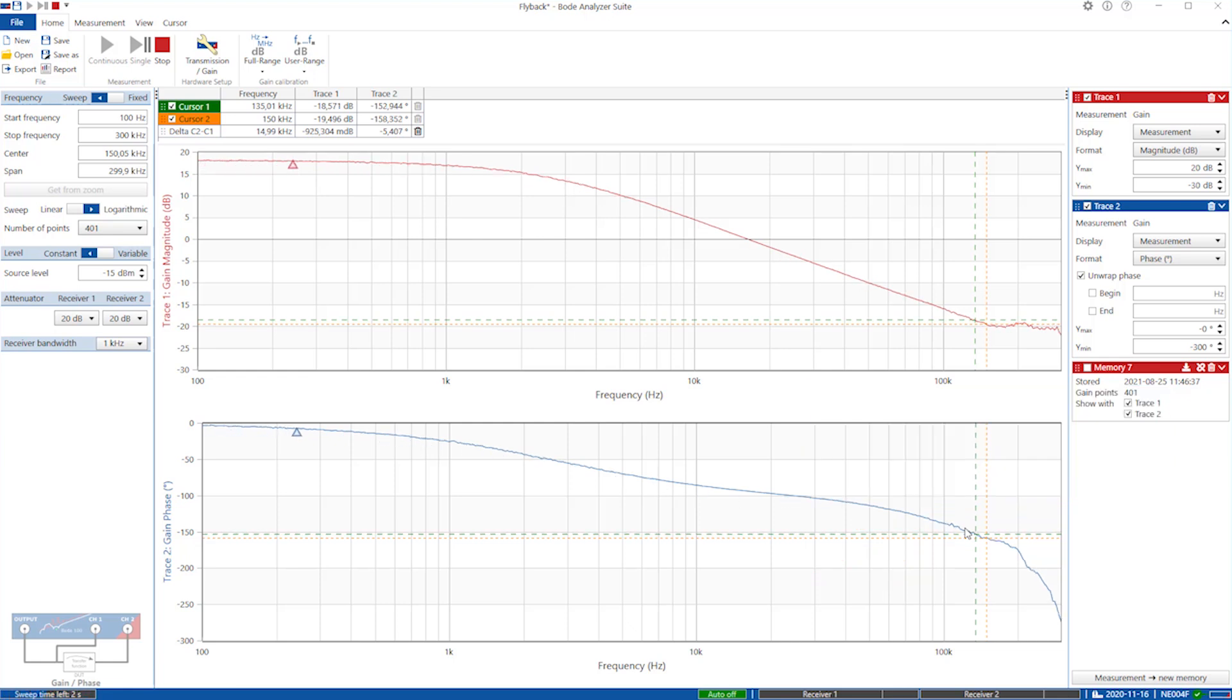Now the way to compensate a converter that has got a right-hand plane zero is to try and cross one decade ahead or earlier than the position of the right-hand plane zero. So you want to be crossing around here, for example, in this particular case.